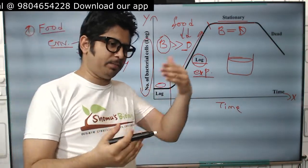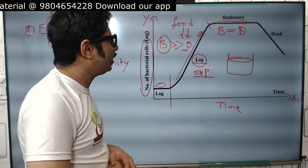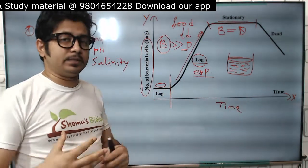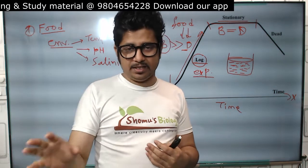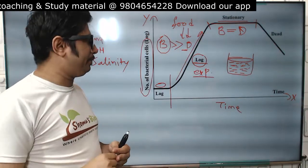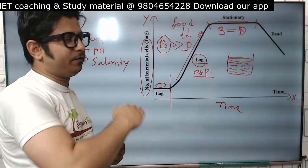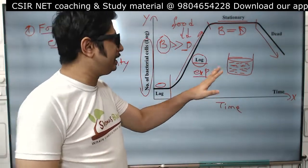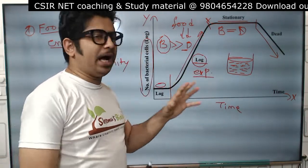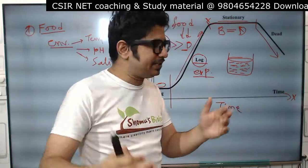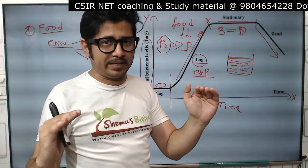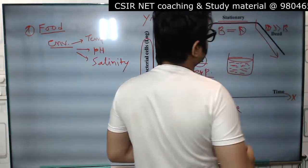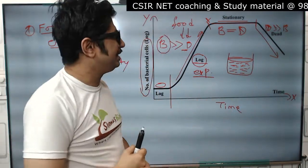In the stationary phase, there is no net growth because the number of bacteria being born equals the number dying. By this time, a huge number of bacteria are present in the medium, releasing increasing amounts of toxic waste, which restricts further growth — this is density-mediated slowdown. Because food is depleted and toxic waste is increasing, every favorable parameter for bacterial growth disappears. Death rate then exceeds birth rate, the curve goes down, and this is known as the death phase.